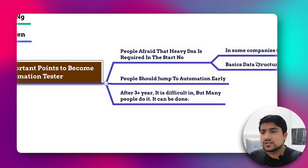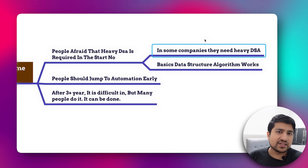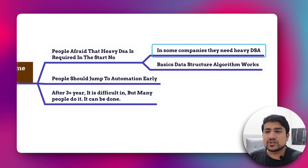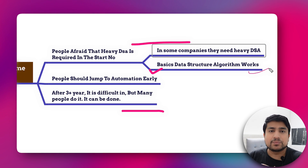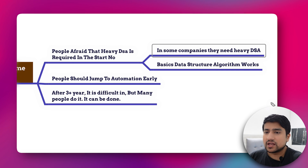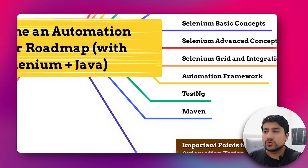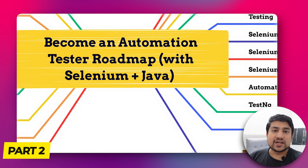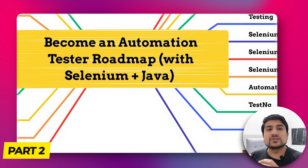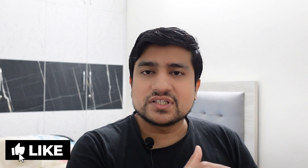My recommendation: if you have zero to two years of experience, now is the time to prepare for three to four months, follow this roadmap, and start becoming an automation tester. Trust me, it will help you a lot. Some companies do require heavy DSA for core automation logic, but that is rare. The roadmap is available in the description. If you want more details on topics and interview preparation, type 'Part 2' in the comments. Please like and subscribe — see you in the next video!